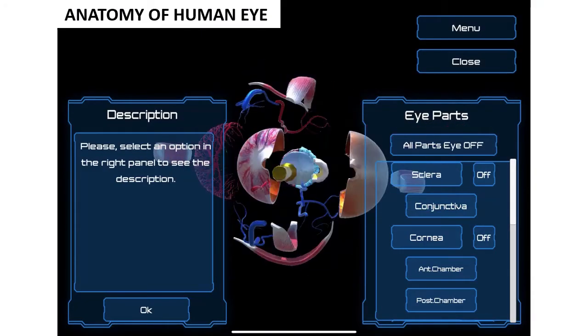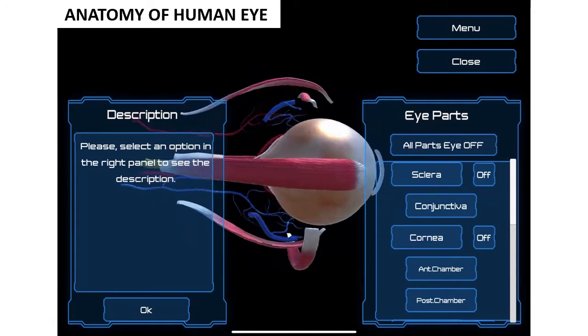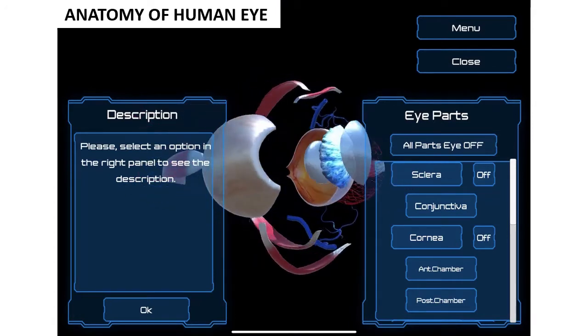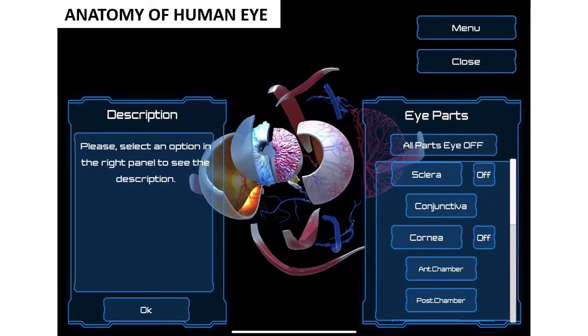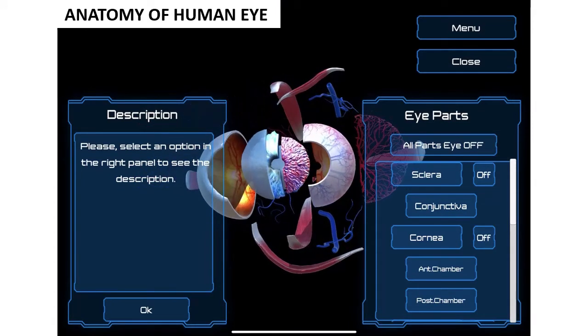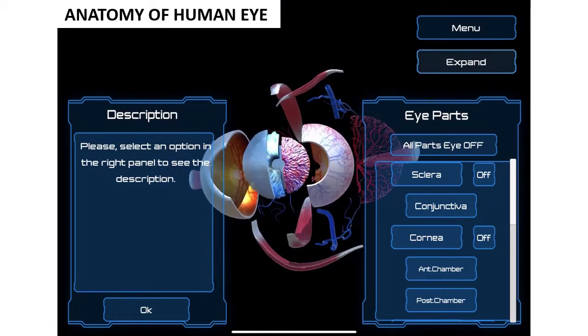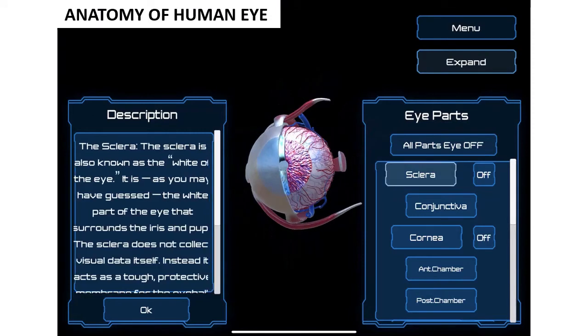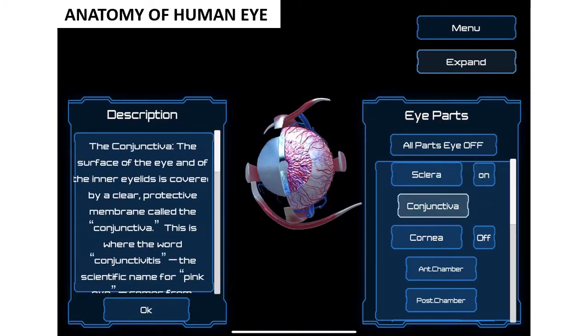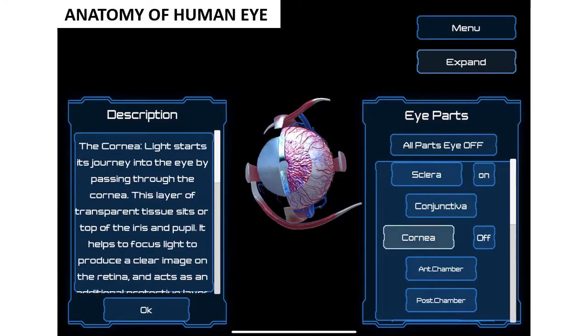On the third one, Anatomy of Human Eye, you have the option of expanding the eyeball. On the left, there is a box with definitions of the structures you can select. On the right, you see the main structures, along with menus, quizzes, and tests.